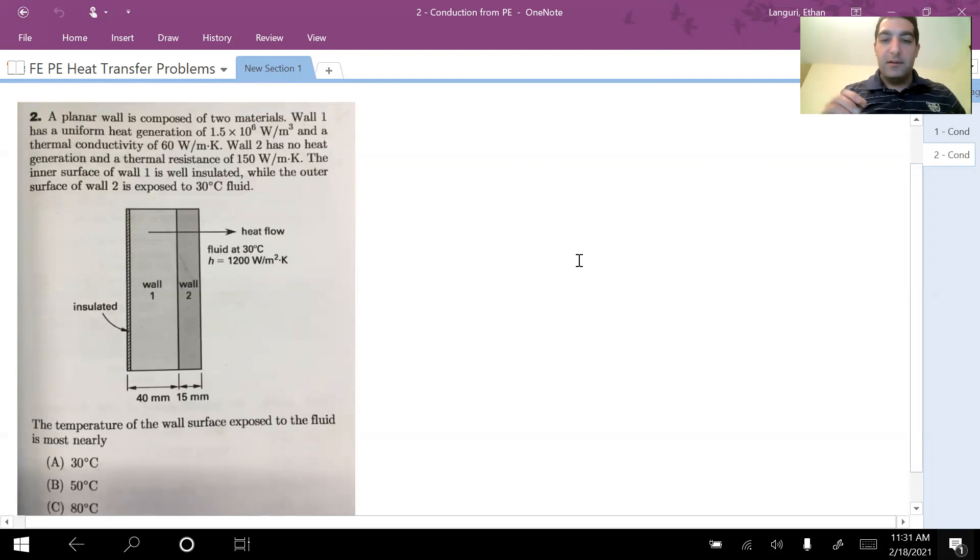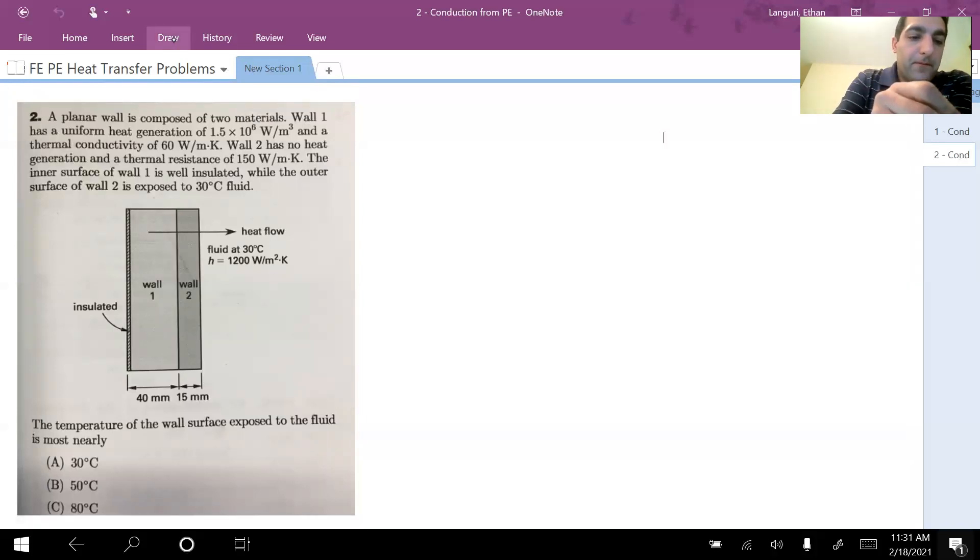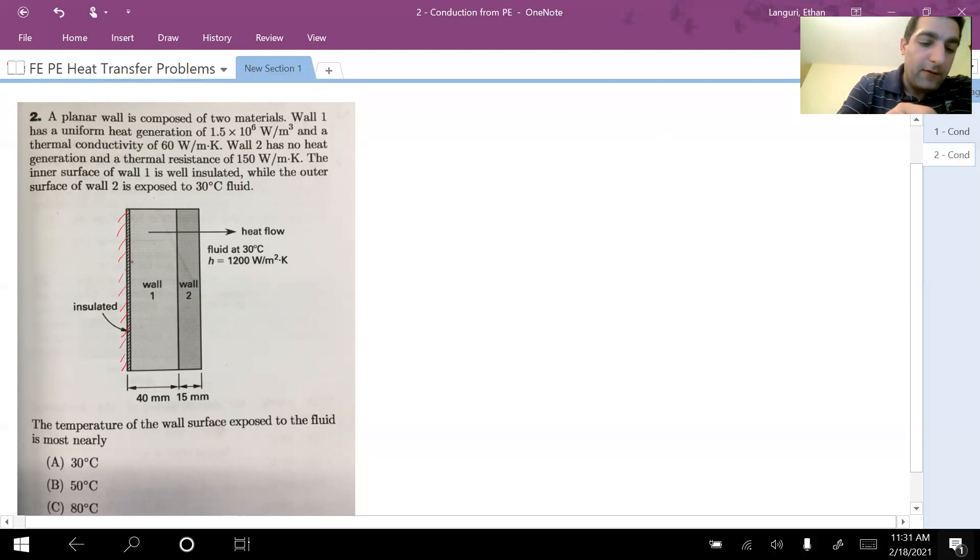So to solve this, we know that when this side is well insulated, that means it's adiabatic and we do not have heat loss or gain from this side. So heat flux through this wall is zero at x equal to zero because it's insulated. So all the heat generated in wall one, which we showed with q dot, which is given to be 1.5 times 10 to the power of 6, all heat in a 1D problem must go to the fluid.